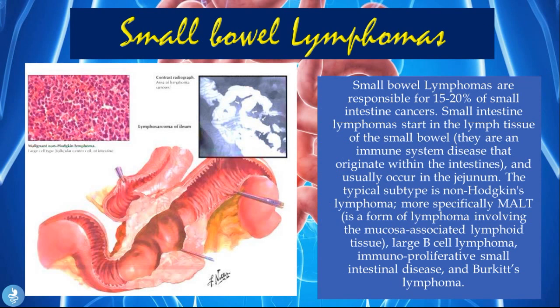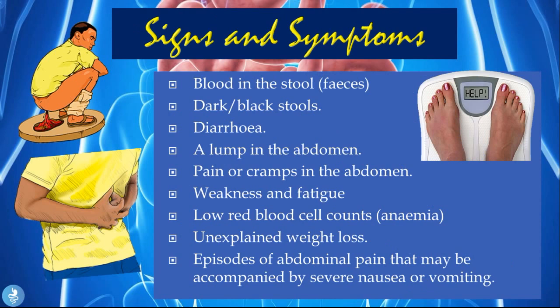Small bowel lymphomas are responsible for 15 to 20 percent of all small intestine cancers. They start in the lymph tissue of the small bowel, meaning they are an immune system disease originating within the intestines, and usually occur in the jejunum. The typical subtype is non-Hodgkin's lymphoma — more specifically MALT (mucosa-associated lymphoid tissue) lymphoma, large B-cell lymphoma, immunoproliferative small intestine disease, and Burkitt's lymphoma.